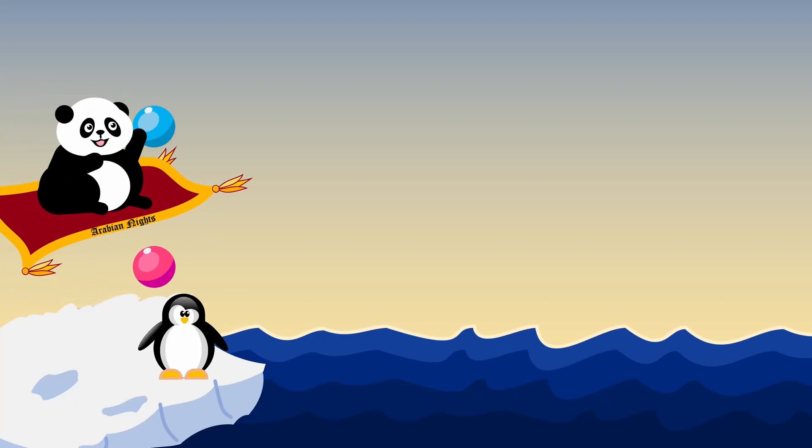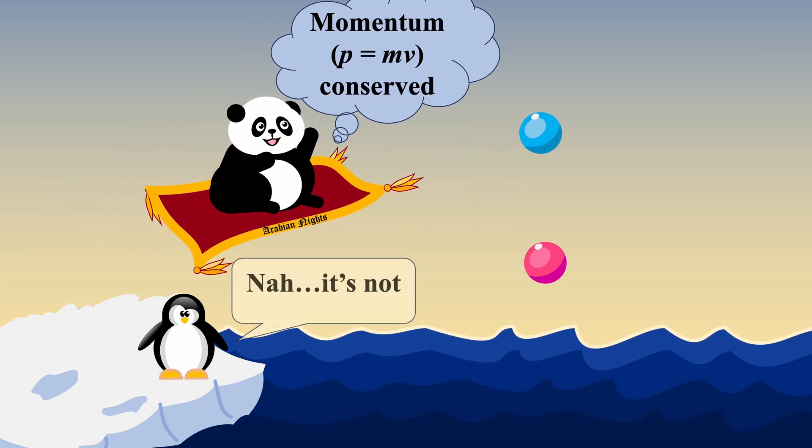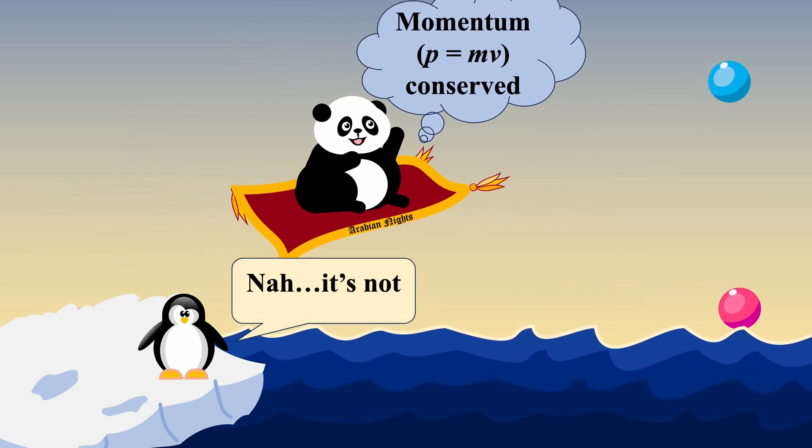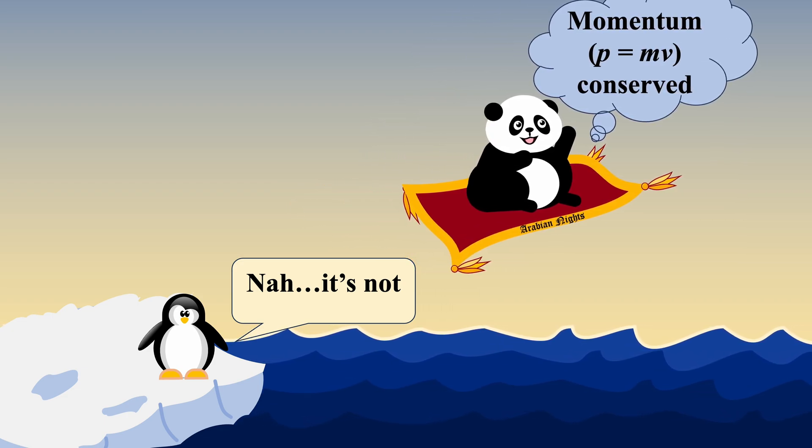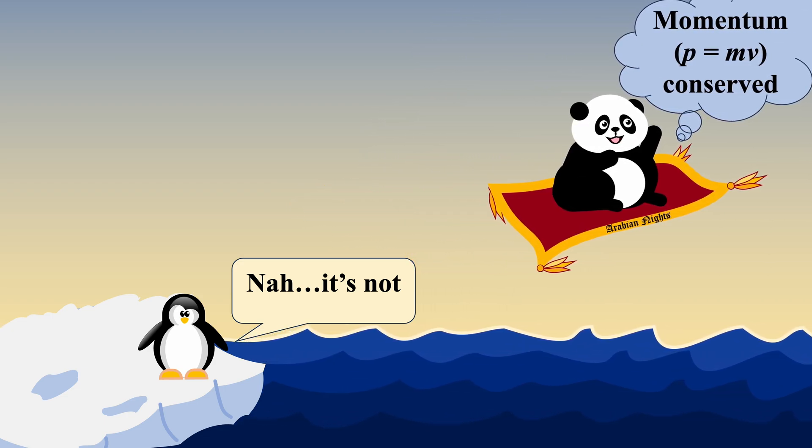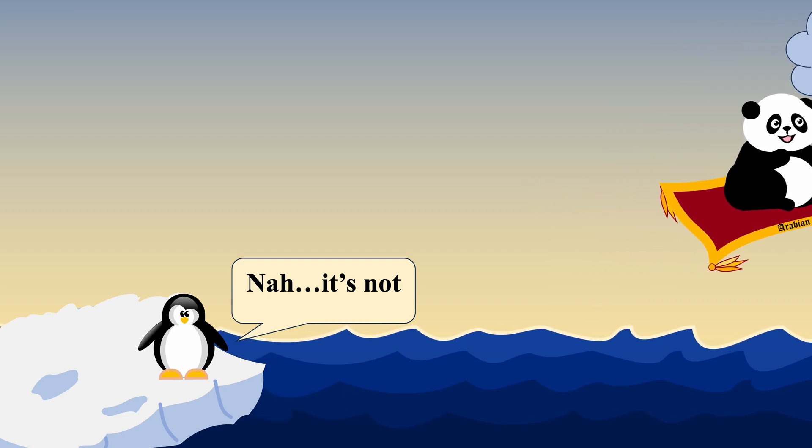Likewise, the conservation of momentum violates the principle of relativity if Newtonian definition of momentum is used. That is, even if Newtonian momentum is conserved in one inertial frame, it is not necessarily conserved in other inertial frames demonstrating its inadequacies.